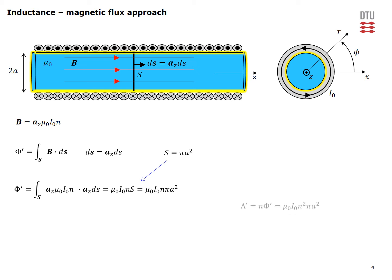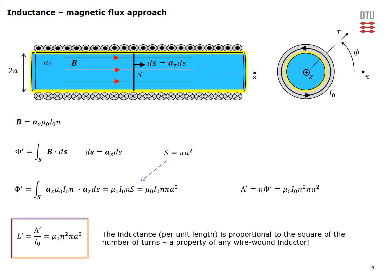When we know the flux per unit length, we calculate the flux linkage per unit length by multiplying the magnetic flux by the number of turns per unit length, giving the expression shown. The inductance per unit length is then the flux linkage per unit length divided by the current in a single turn. The final result shows that the inductance is proportional to the square of the number of turns per unit length — a property which is general for any wire-wound inductor.